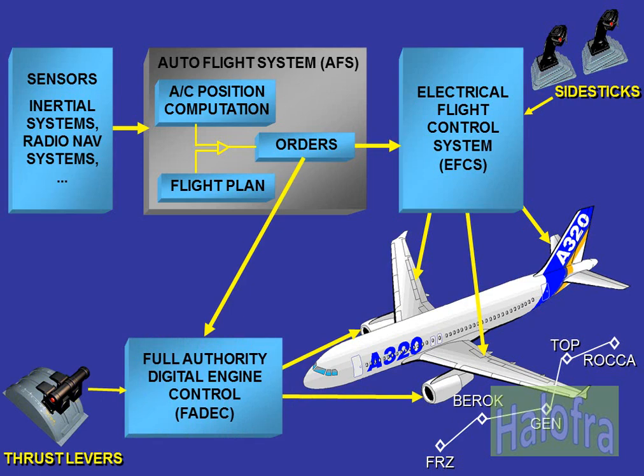The Auto Flight System, AFS, calculates the position of the aircraft using several aircraft sensors. In addition, the system has several flight plans in its memory. These are predetermined by the airline. A flight plan describes a complete flight from departure to arrival. It includes vertical information and all intermediate waypoints. Knowing the position of the aircraft and the desired flight plan chosen by the pilot, the AFS is able to compute the orders sent to the flight controls and engines so that the aircraft follows the flight plan.